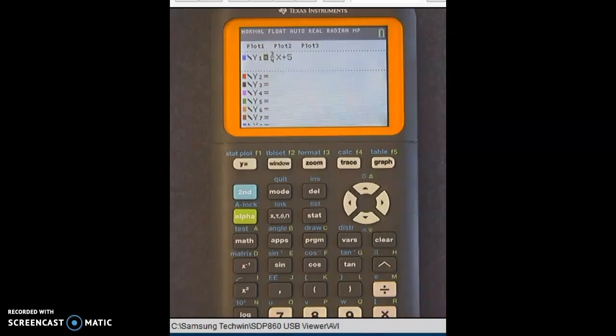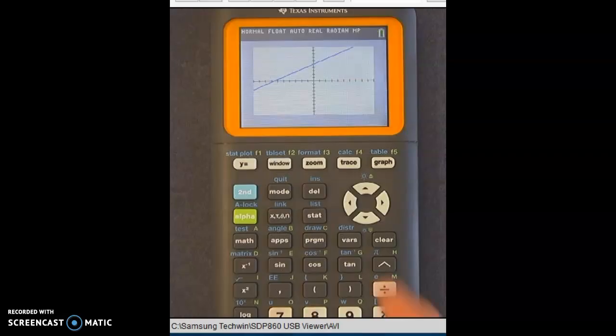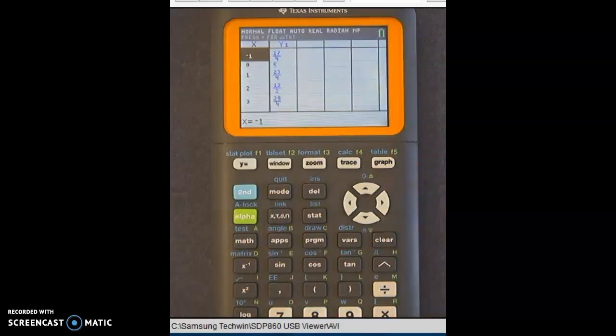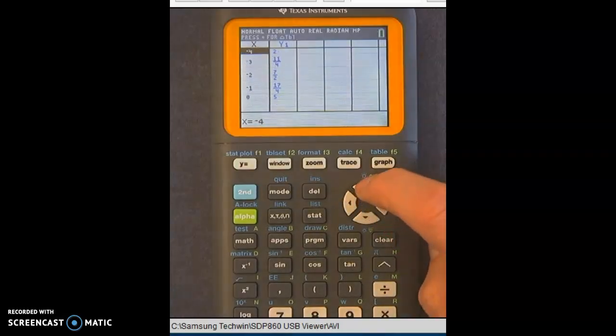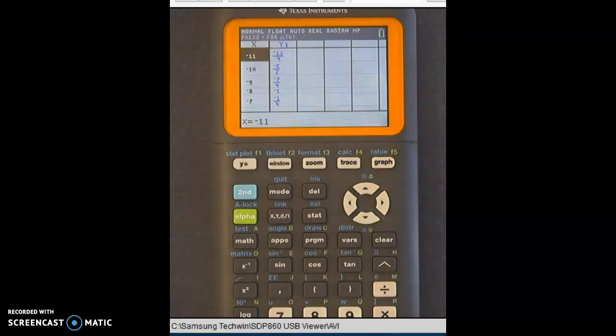If I wanted to see that graph, I would hit graph. And if instead I wanted to see that table, I would hit second, then graph. So hopefully this makes sense. And you guys got a good sense of how to use your graphing calculators. As always, if you have questions, let me know. Good luck.